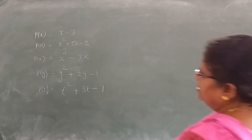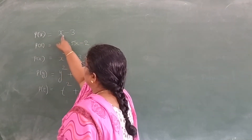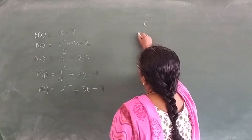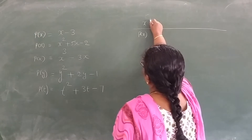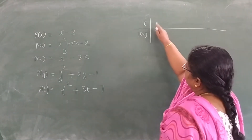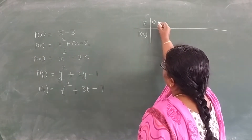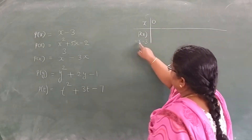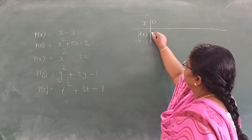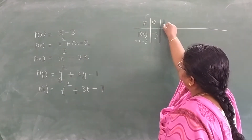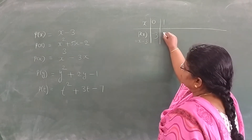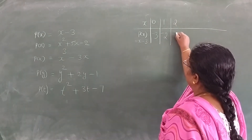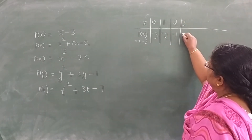Now I am taking p(x) = x minus 3. I am giving different values for x. When x is equal to 0, it is 0 minus 3, which is minus 3. If I put x equal to 1, then 1 minus 3 is minus 2. If I put x equal to 2, then 2 minus 3 is minus 1. If I put x equal to 3, then 3 minus 3 is 0.